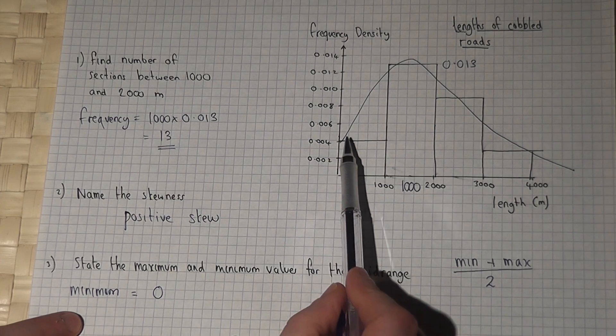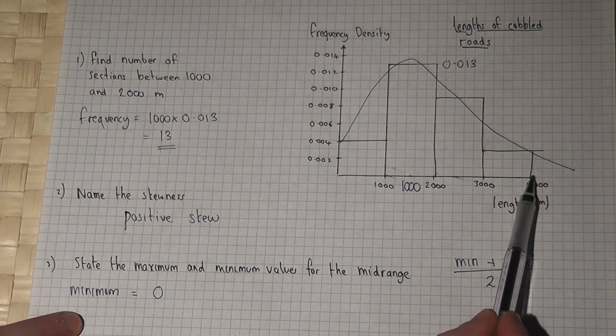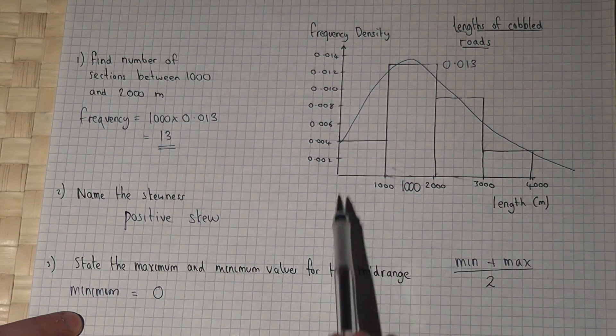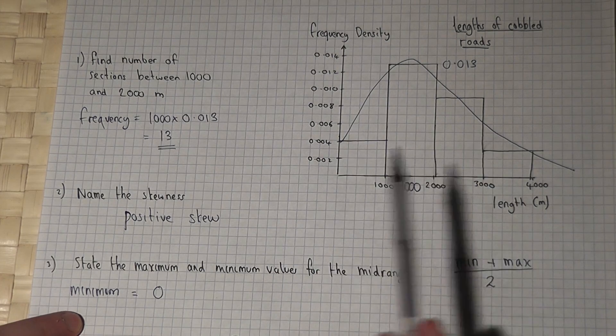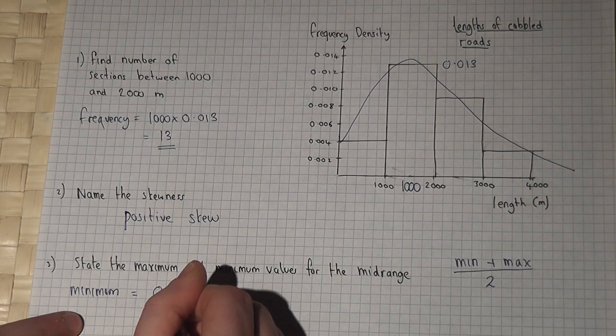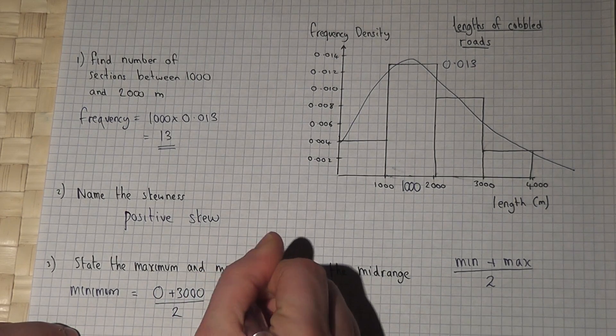However, the lowest possible maximum value isn't 4000. It might be as low as 3000 because this final bar starts at 3000. So it's 0 plus 3000 divided by 2, which gives 1500 meters.